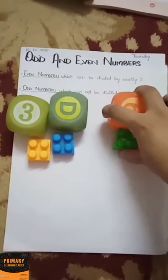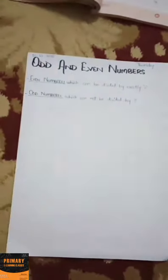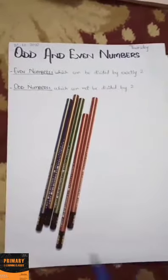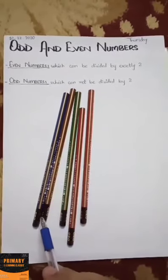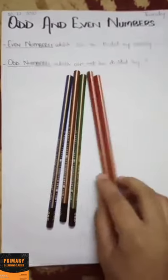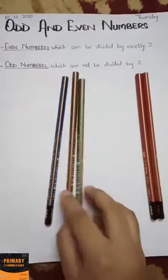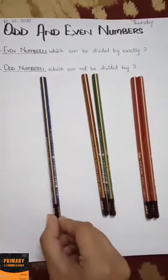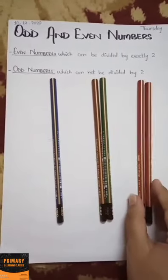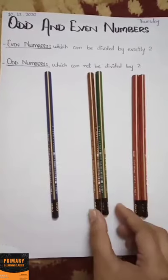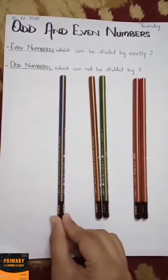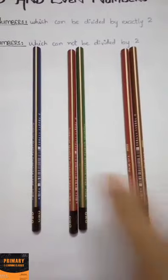Let's take another example. I have pencils — one, two, three, four, five. I'll make groups of these five pencils: group one, group two. You can see I have an incomplete group because I have two pencils in each group, but the third group is incomplete as it has only one pencil. So five is an odd number.